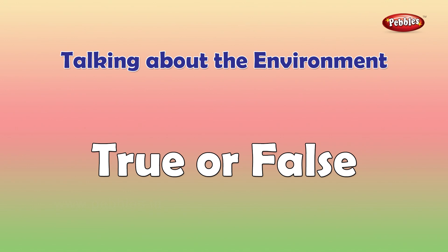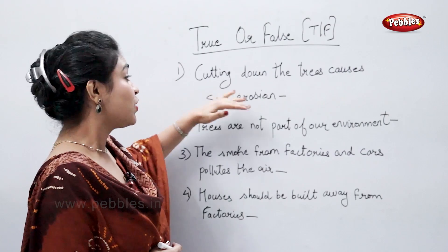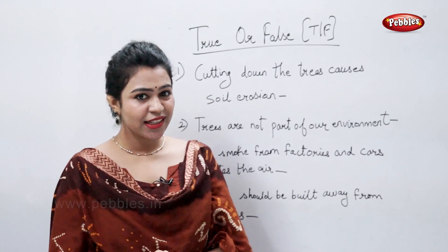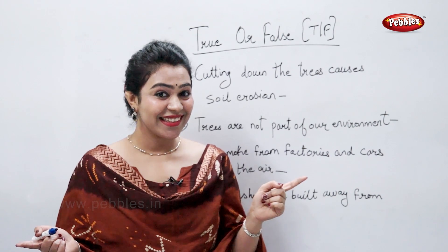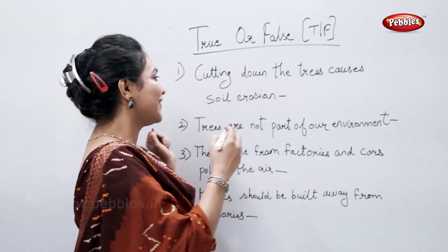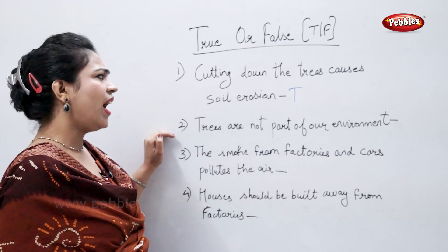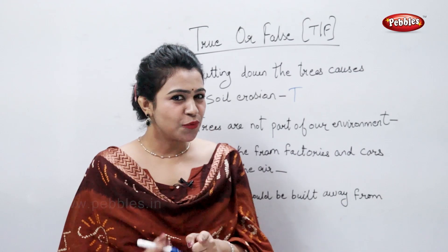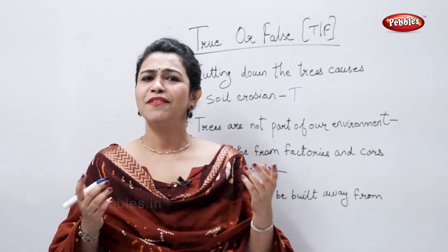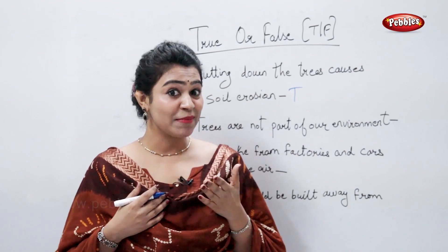True or false. Cutting down the trees causes soil erosion. Come on students, tell me — that's true or false? That's true. Trees are not part of our environment. Is that true or false? False. Trees are definitely part of our environment.